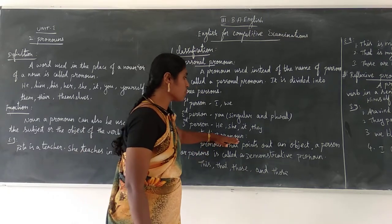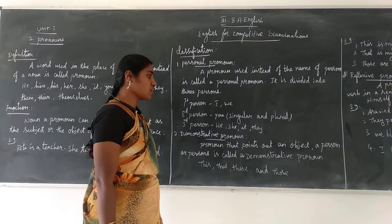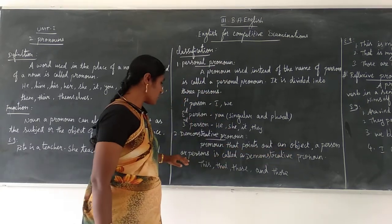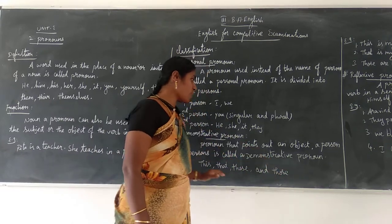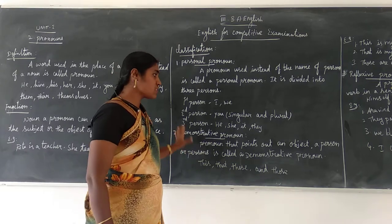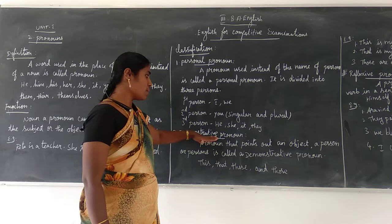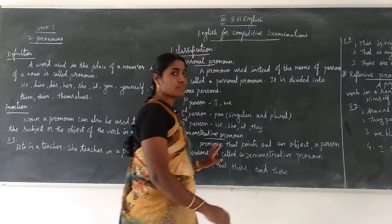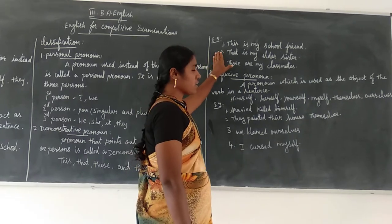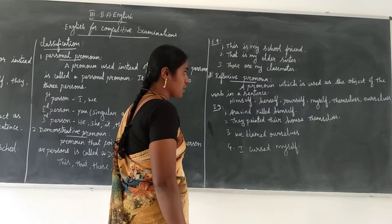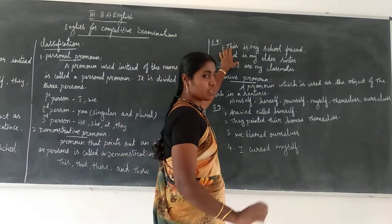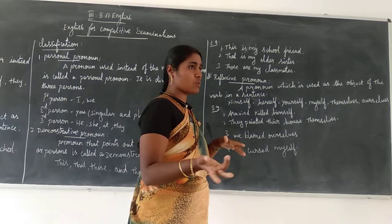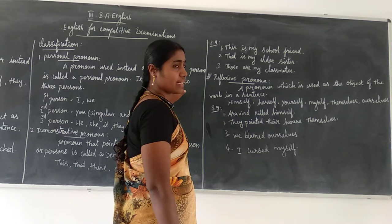Second one is Demonstrative Pronoun. This Demonstrative Pronoun points to objects or persons. The pronoun that points to an object or a person is called the Demonstrative Pronoun. When you find out one person in a place, you have to use the Demonstrative Pronoun. For example: this, that, these, and those. For this first, I use a sentence: 'This is my school friend.' When we compare to other persons you say 'he is my school friend,' but that is using a personal pronoun.